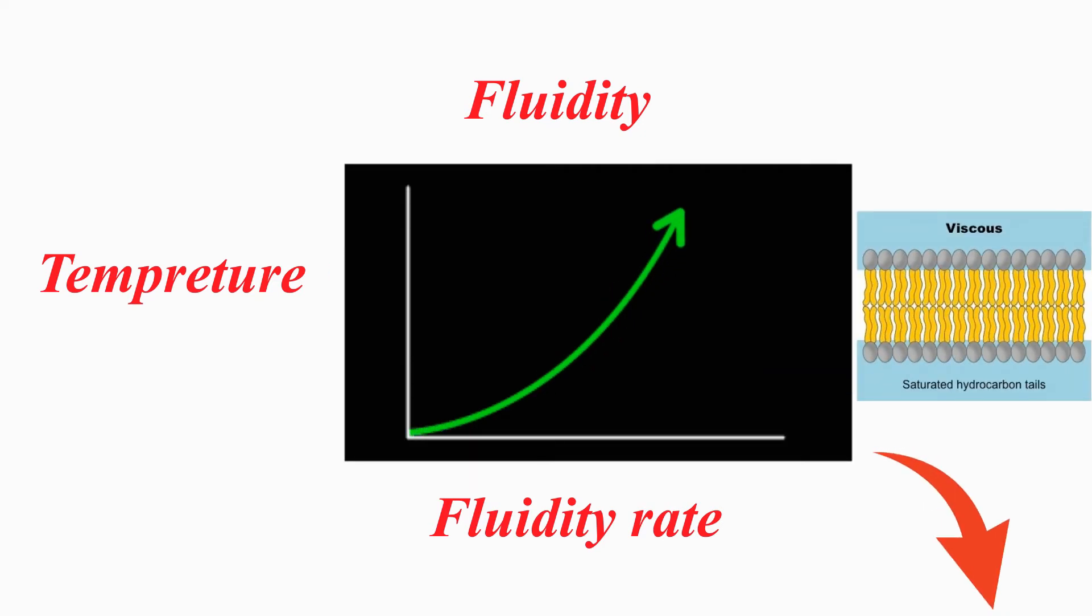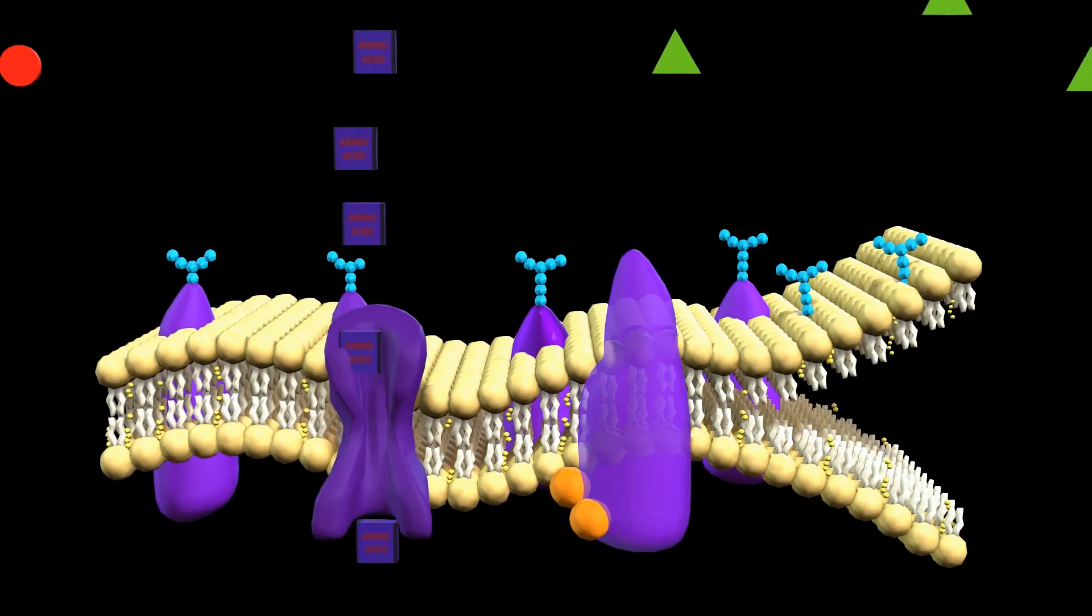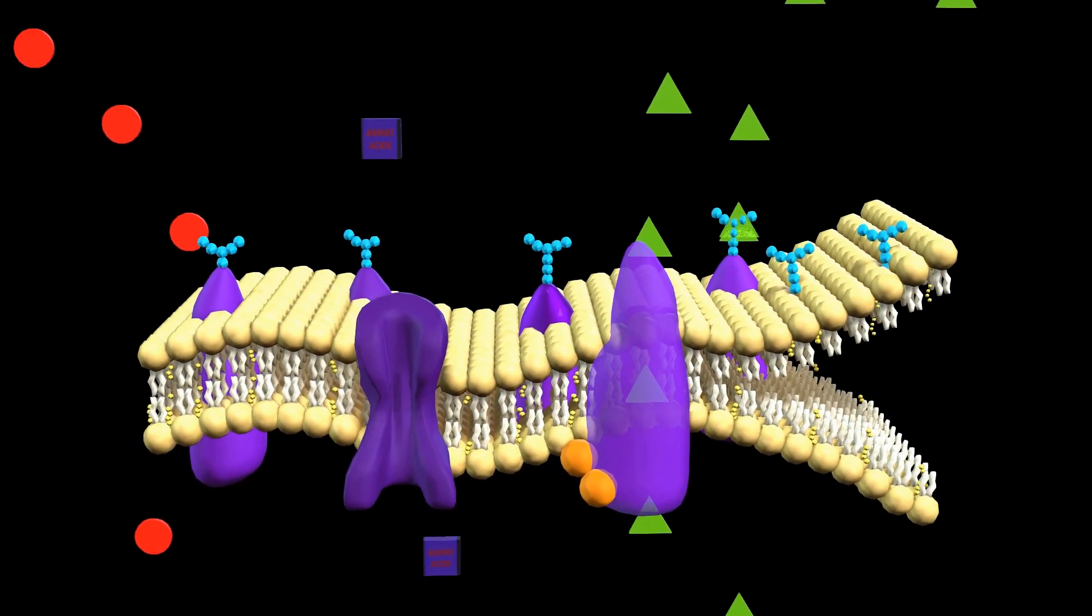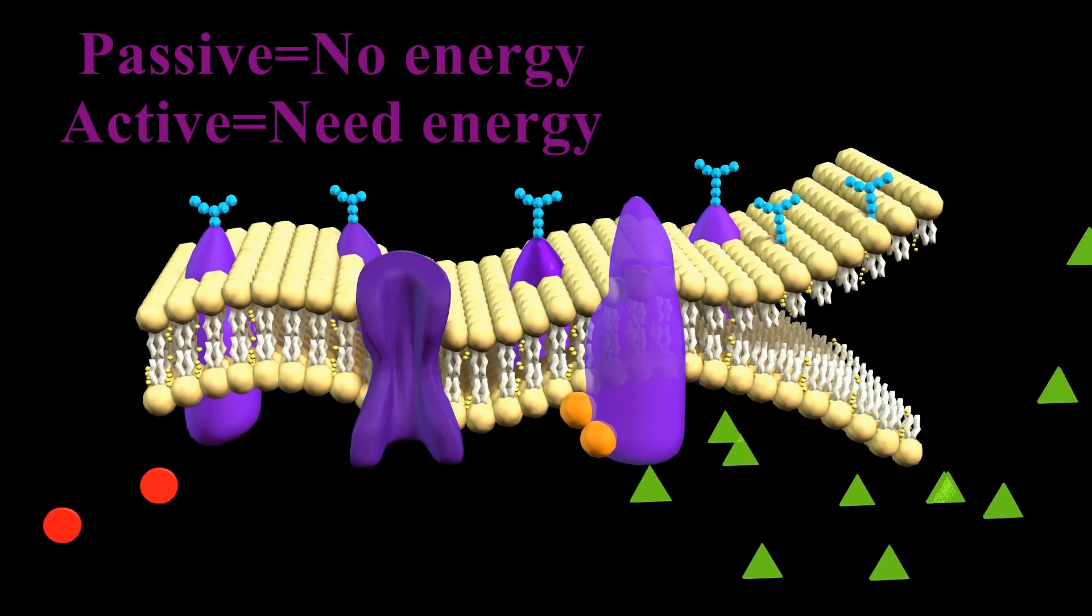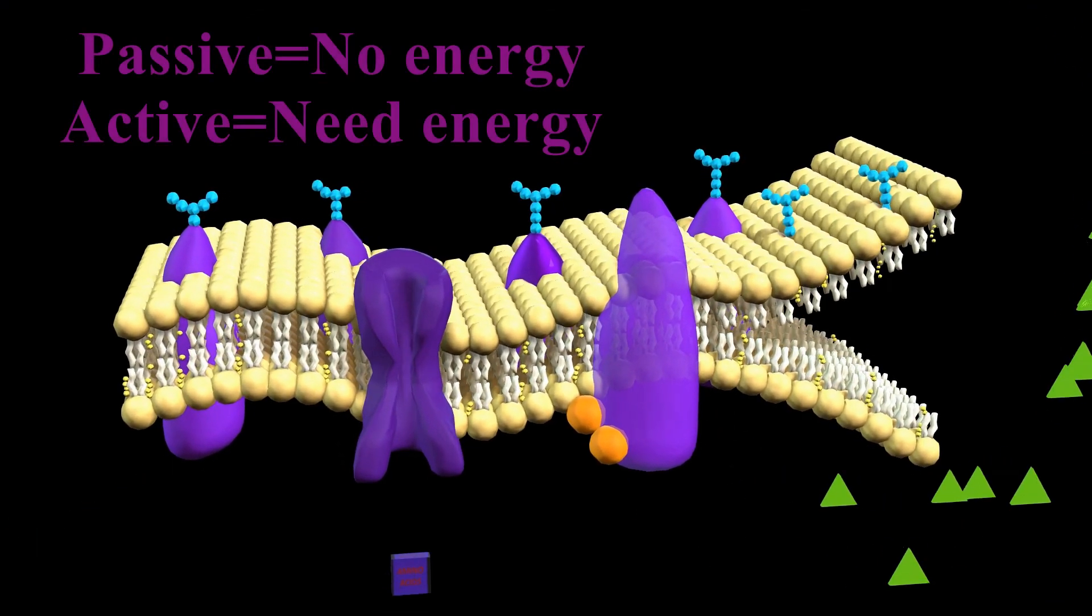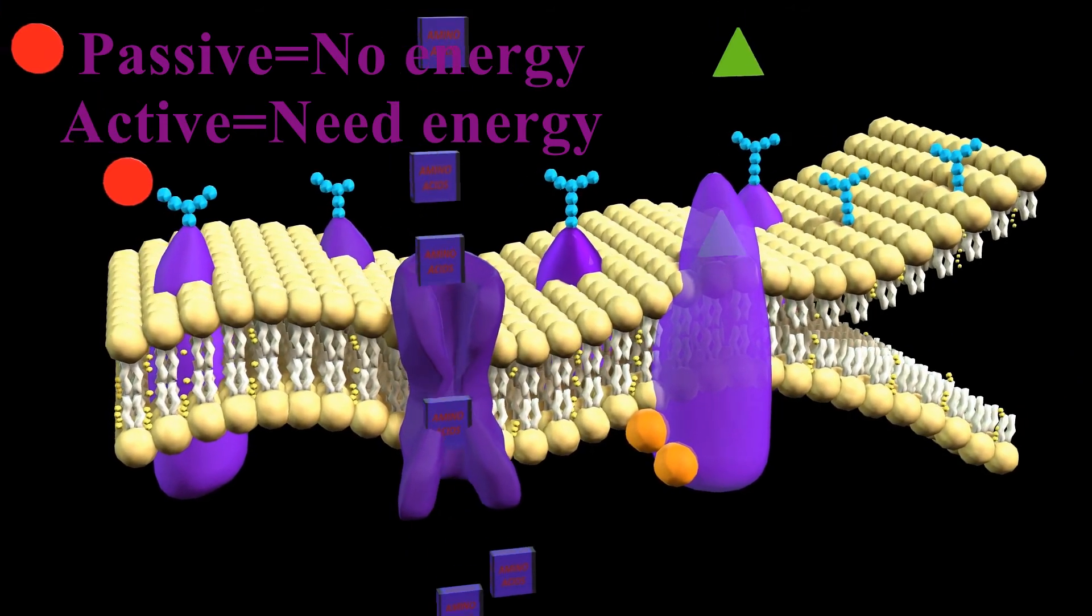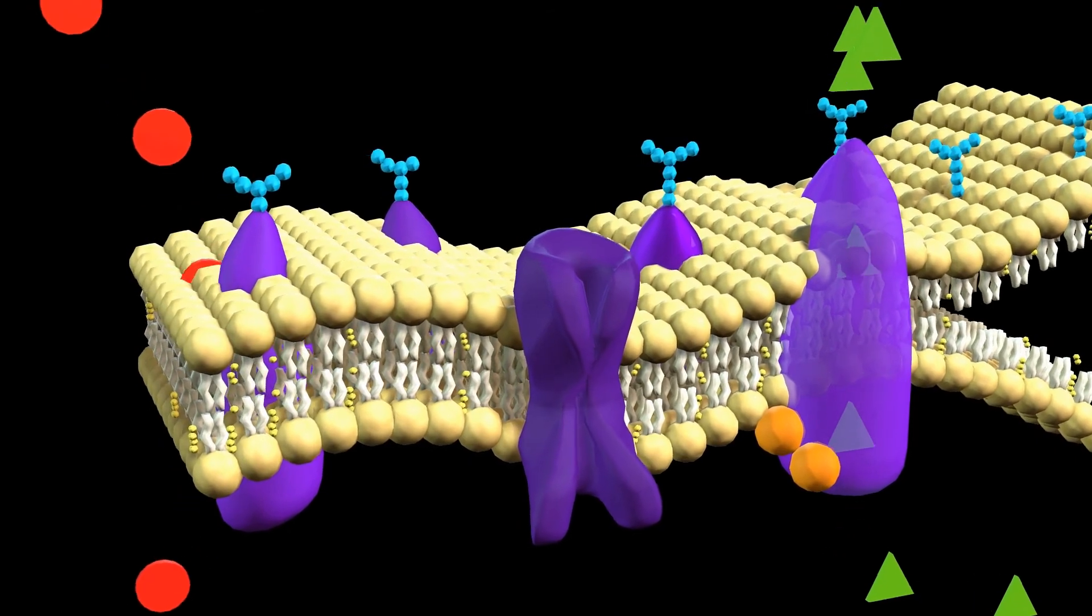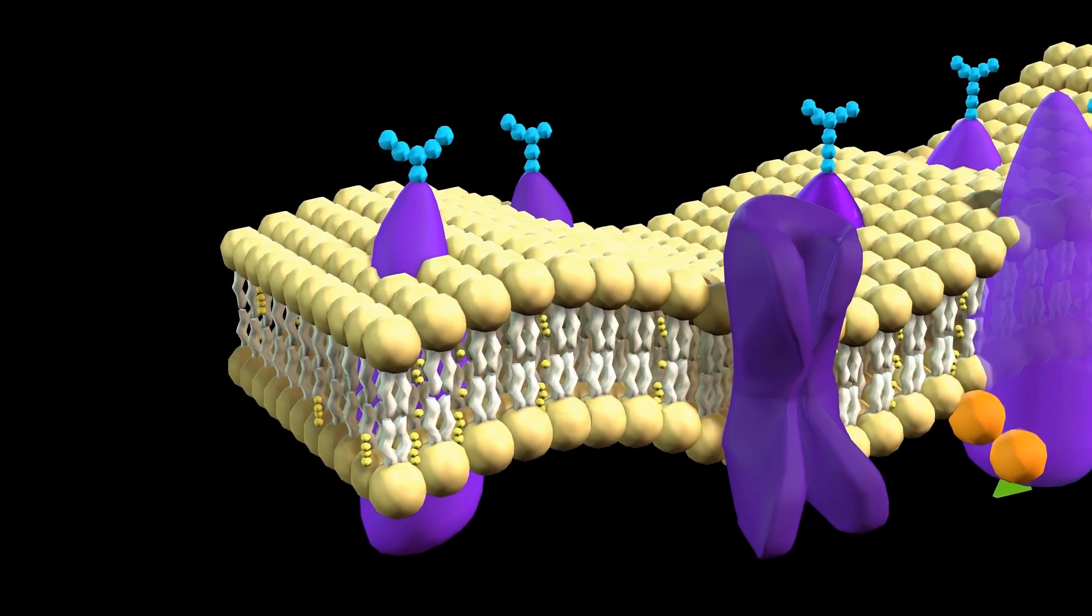The movement of a substance across the selectively permeable plasma membrane can be either passive—occurring without cellular energy—or active—requiring cellular energy. The cell employs a number of transport mechanisms that involve biological membranes.